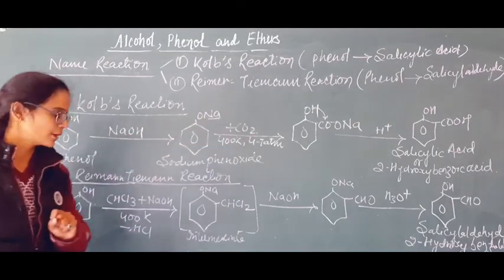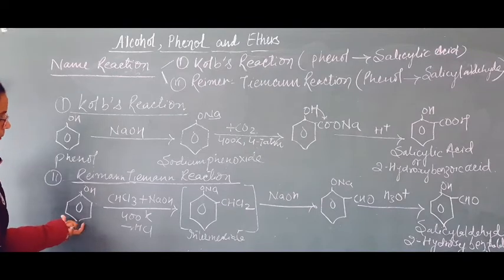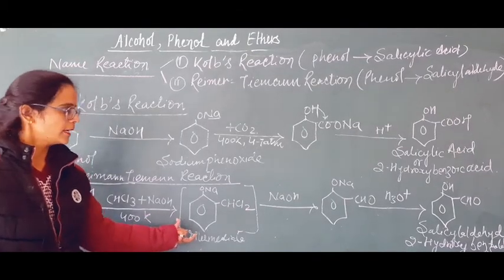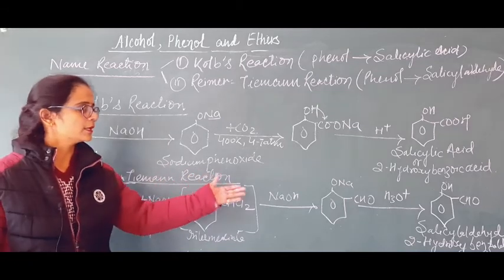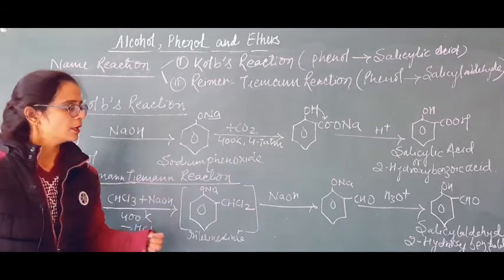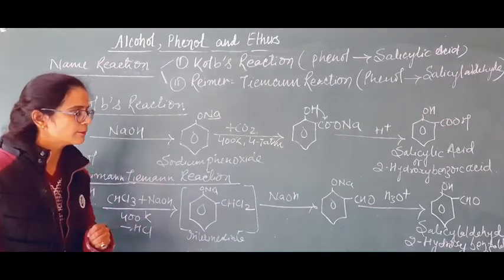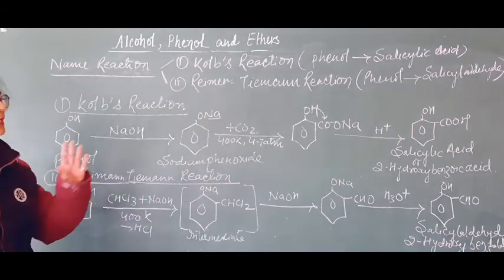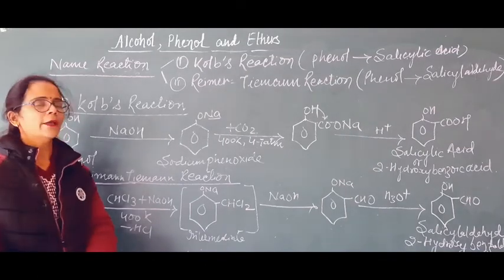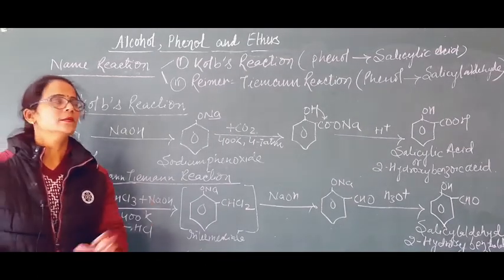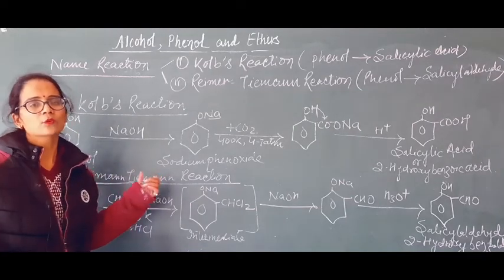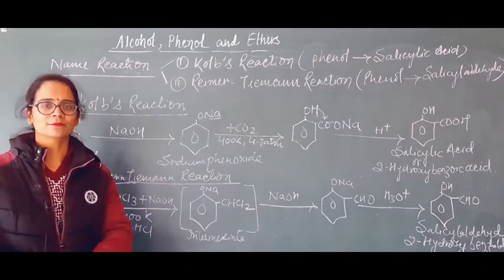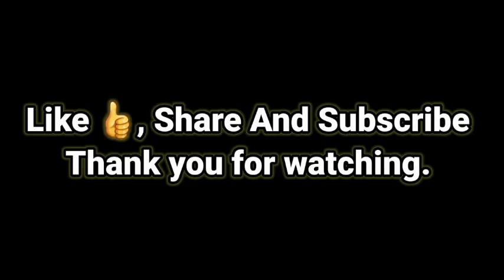Finally, acid workup gives the product. Similarly, in Reimer-Tiemann, phenol reacts with chloroform and NaOH in the first step — minus HCl — then NaOH again in the second step converts the intermediate, and CHO comes at the ortho position. Finally, reaction with H₃O⁺ gives salicylaldehyde as the main product of Reimer-Tiemann reaction. I hope you liked today's video. Practice this topic and secure it for your board exam. Thank you for watching.